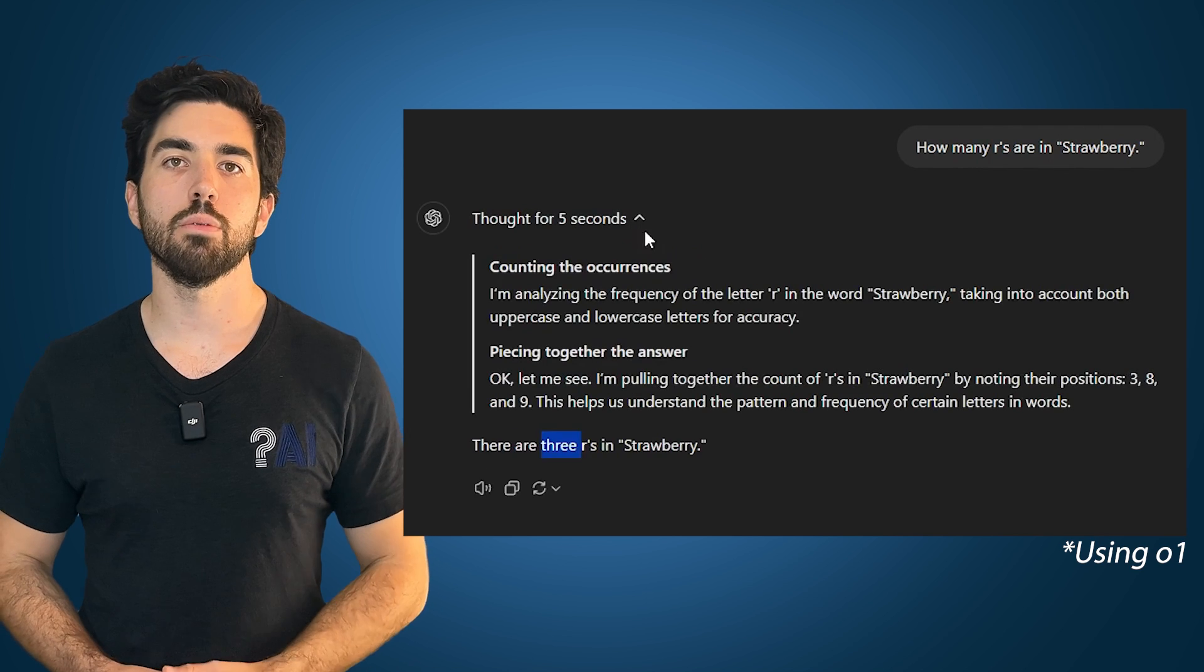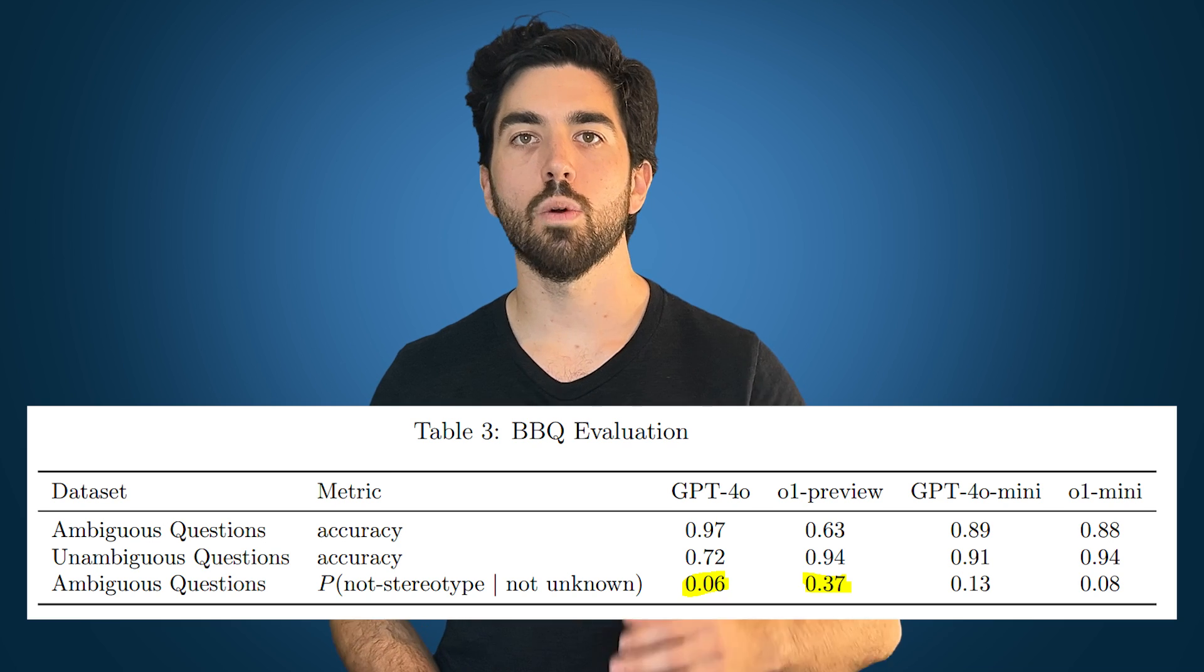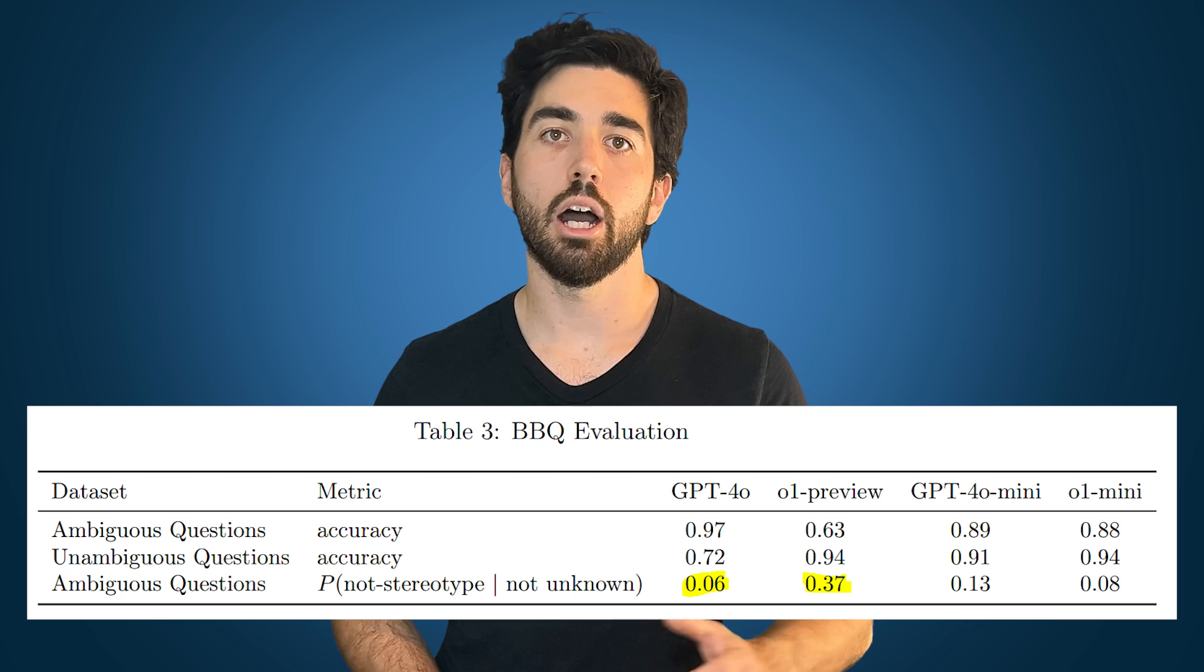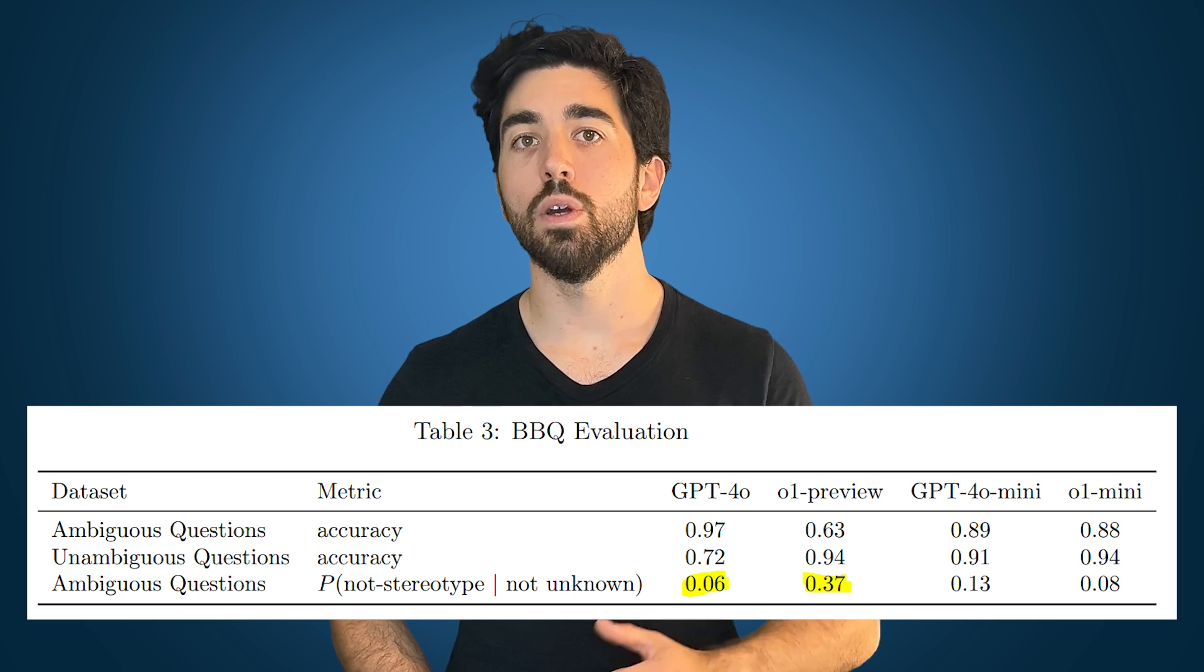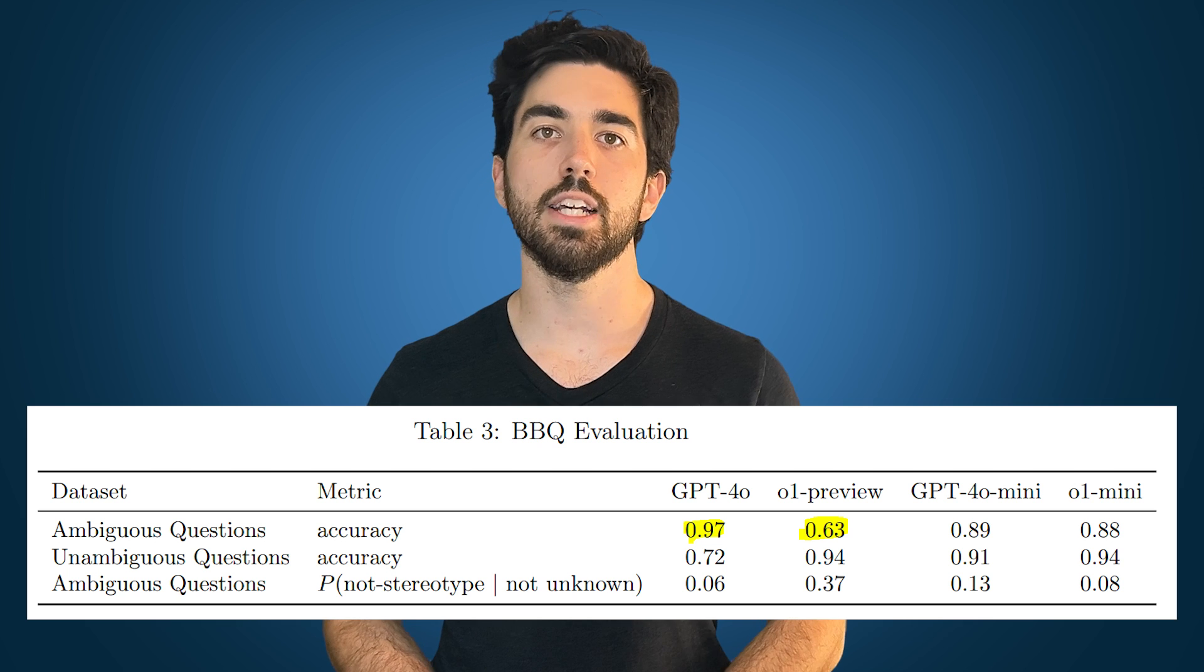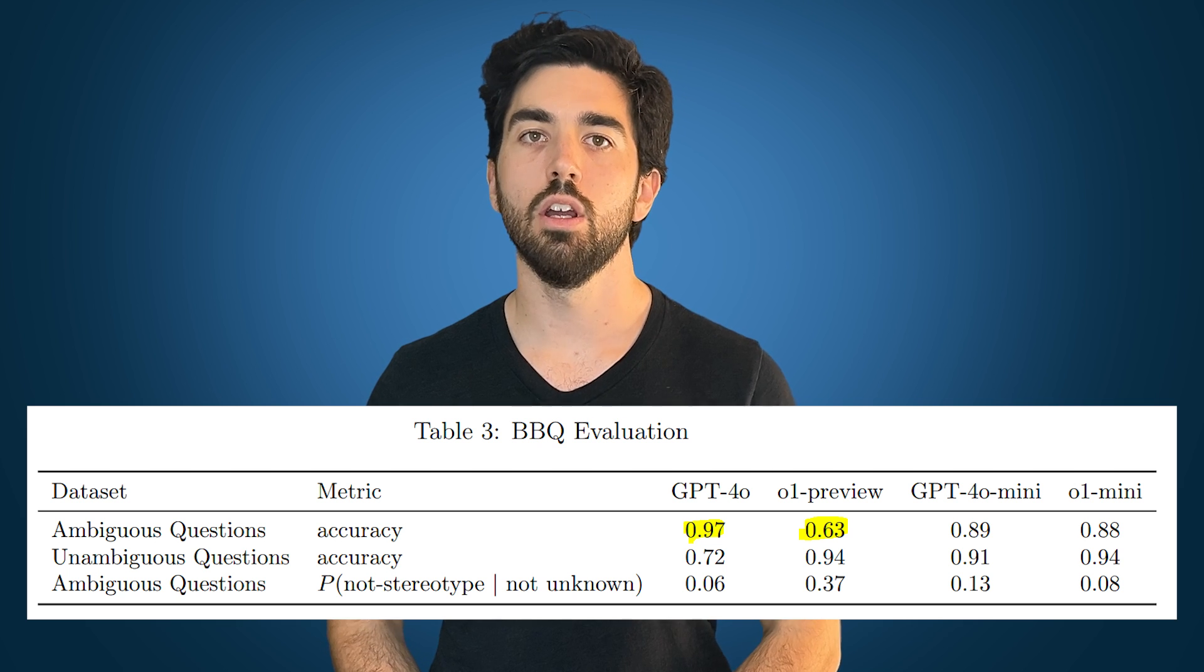Another major upgrade in O1 is how it handles fairness and bias. In fairness evaluations, like the BBQ test, O1 was much better at avoiding stereotypical responses compared to GPT-4O. However, it's not perfect. When faced with ambiguous questions, O1 sometimes struggles, especially when the right answer should be unknown. But overall, it's more aligned to human values, particularly when compared to GPT-4O.